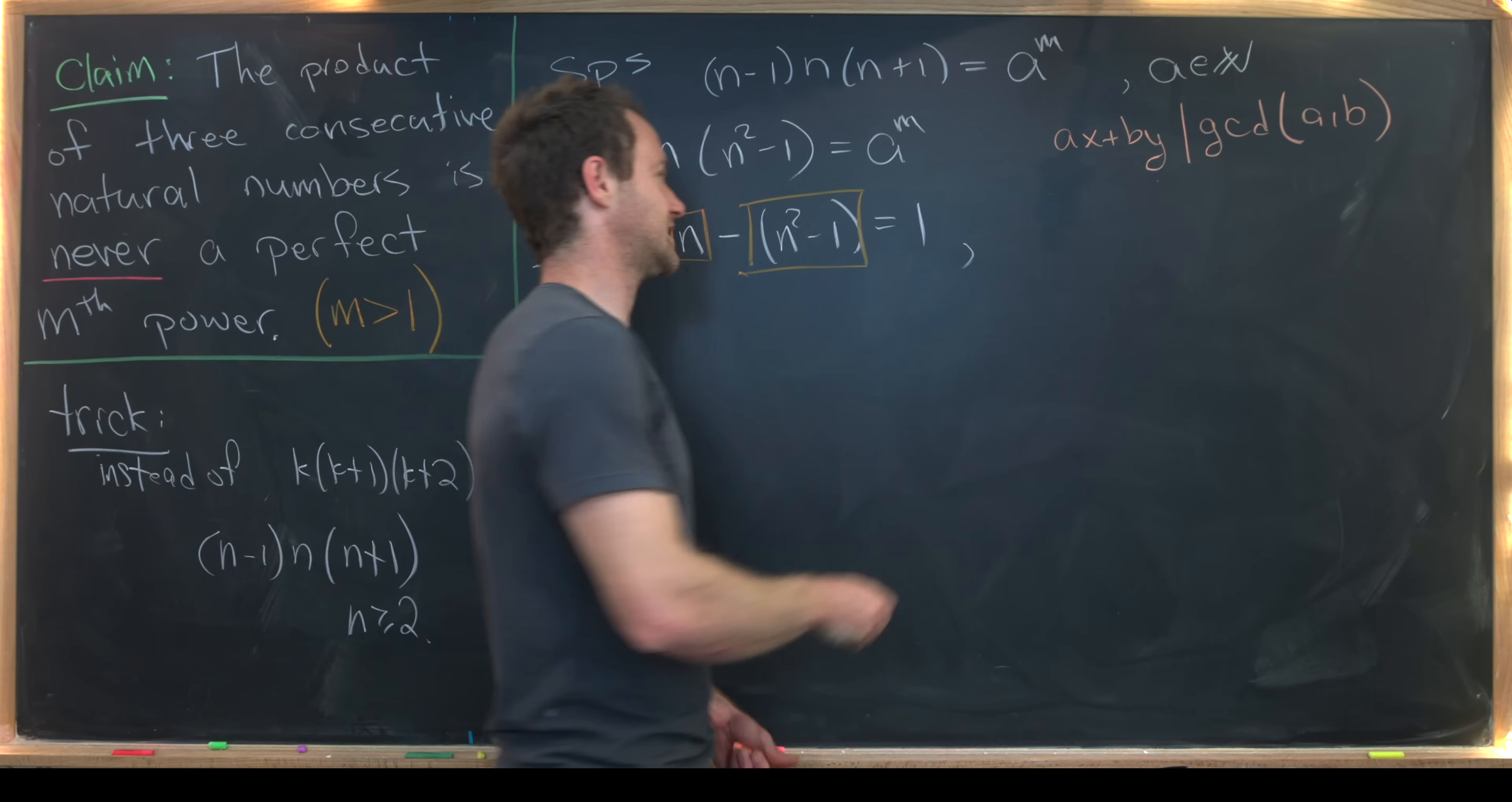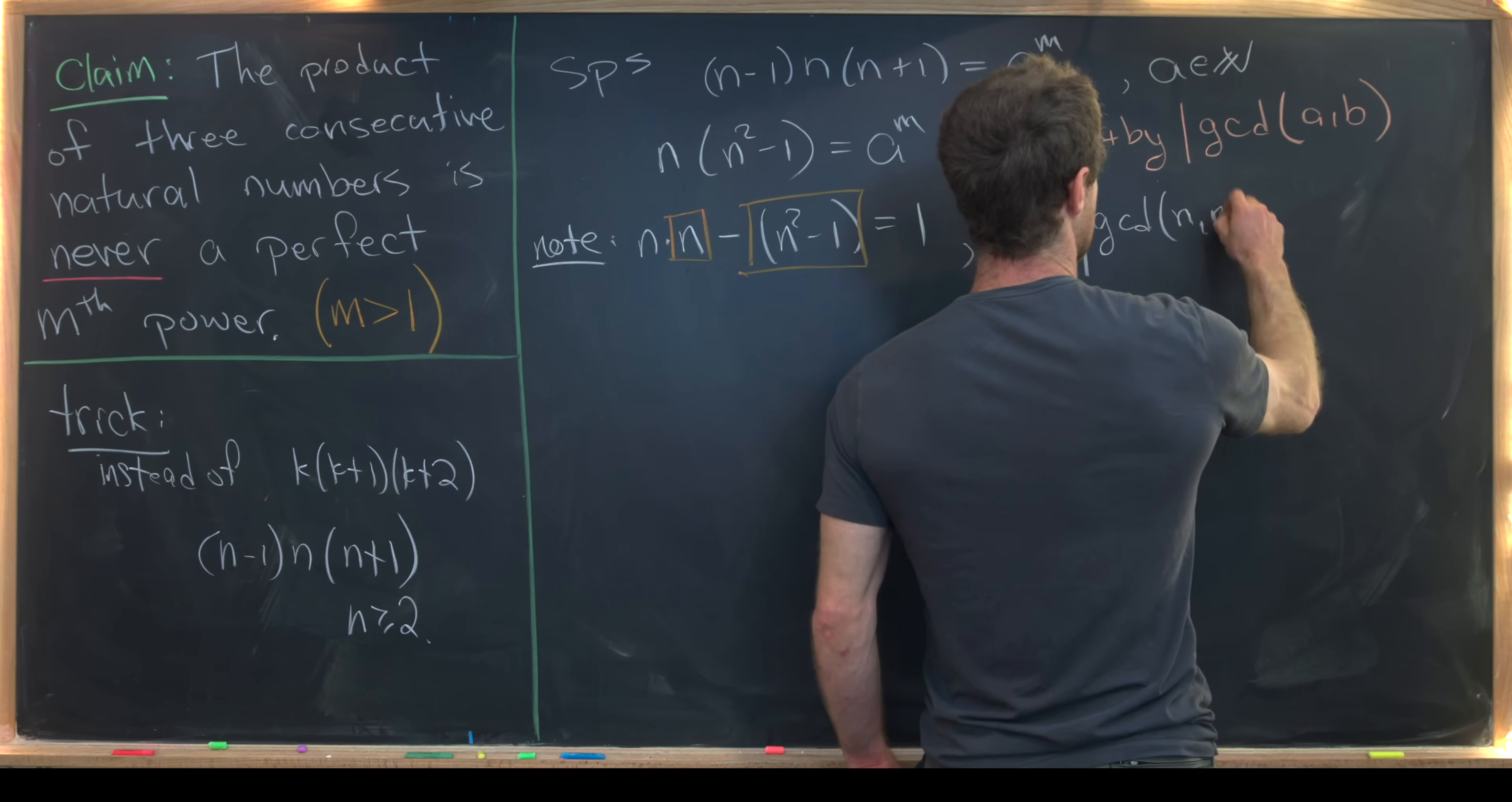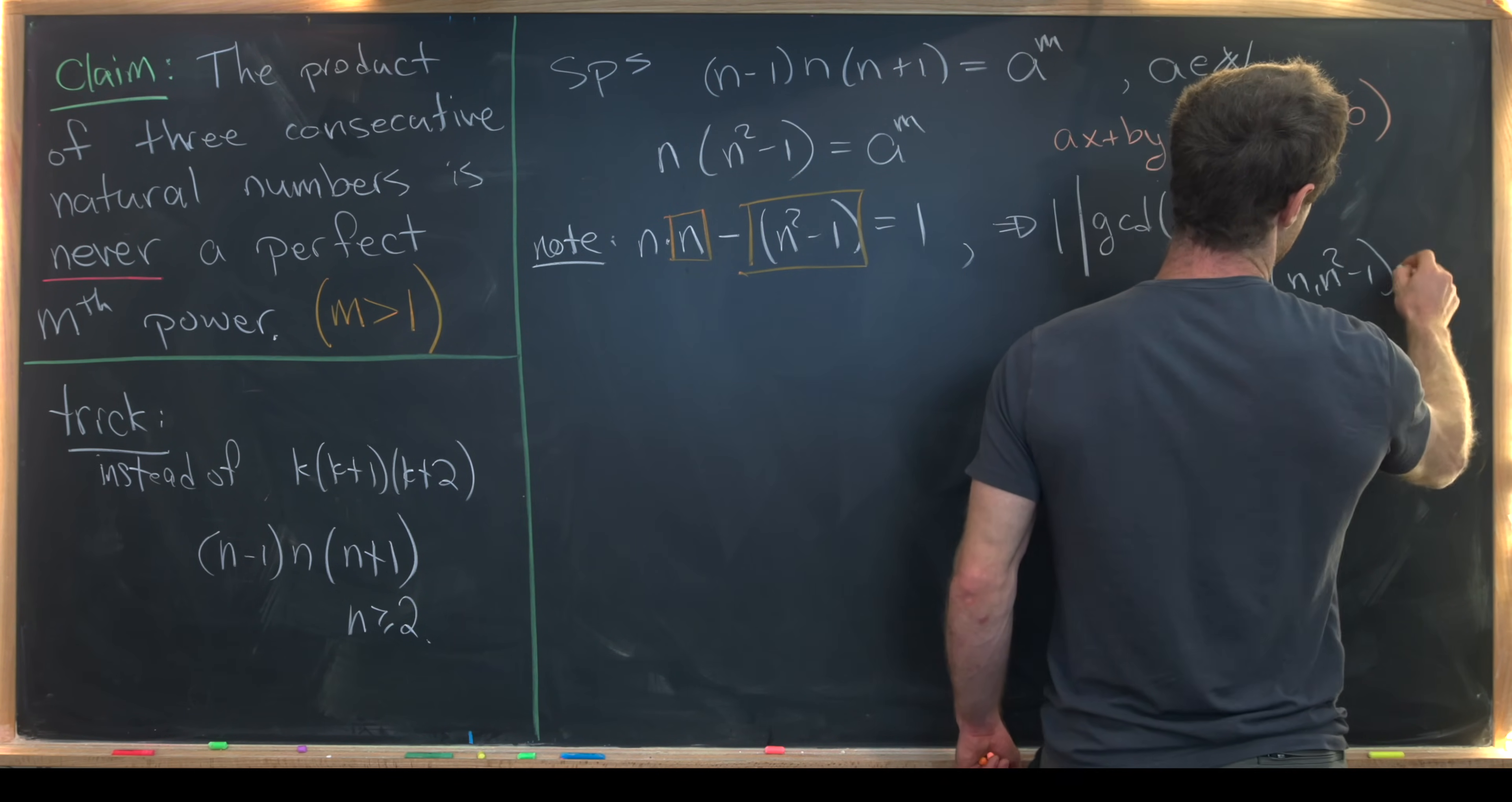But that's exactly the kind of setup we have here. So that means 1 divides the GCD of n and n squared minus 1, which further tells us that the GCD of these two numbers is equal to 1. Great.